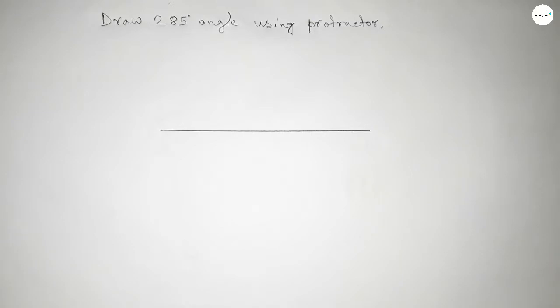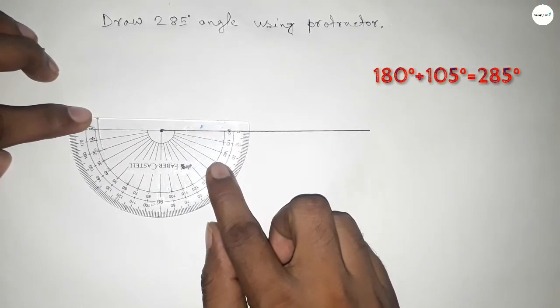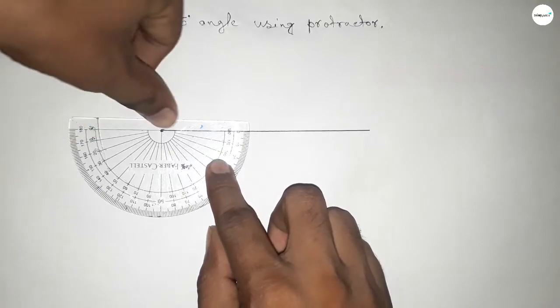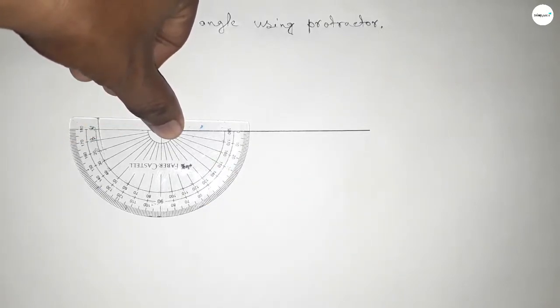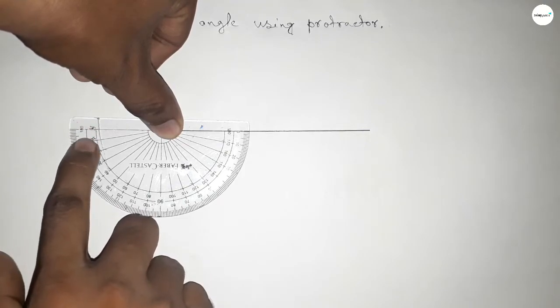So if we add a 105-degree angle with 180 degrees, then we can get 285 degrees. Putting the protractor on the line this way, now this is 180 degrees. Now we have to count 105 degrees.